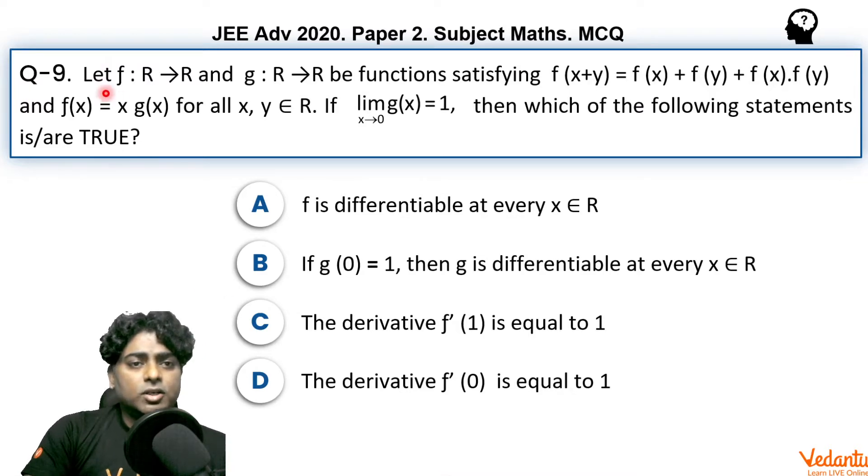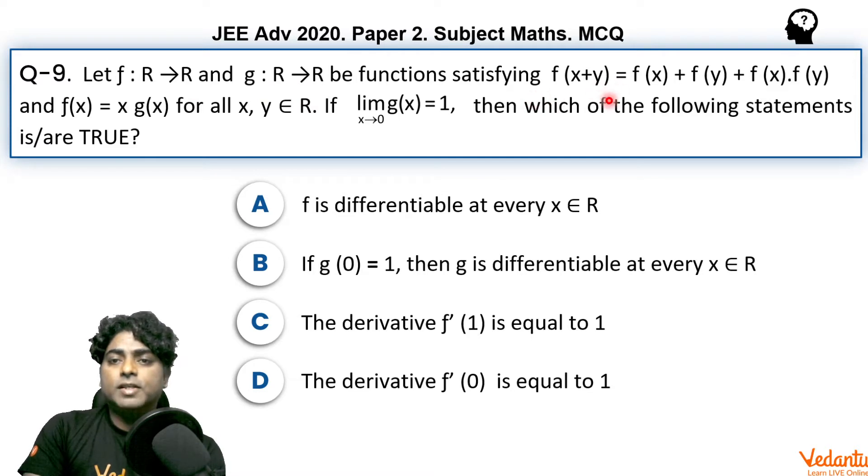It is a good level problem. Let f and g be functions satisfying f(x+y) = f(x) + f(y) + f(x)·f(y), and g is the function such that f(x) = x·g(x) for all x belongs to R, real numbers. If limit of g(x) when x tends to 0 is 1, then which of the following statements is true?